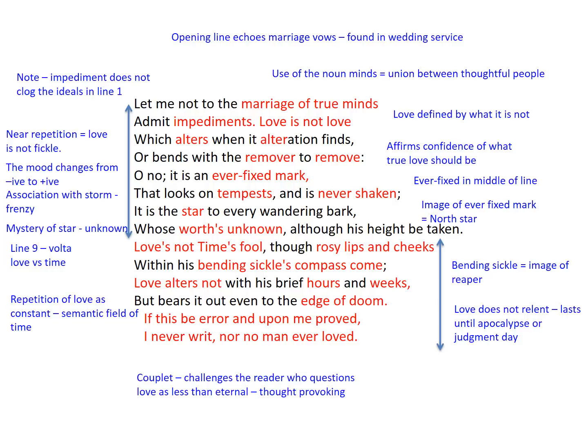Fundamentally, Sonnet 116 is one of the most iconic poems of its type and of its time, as it establishes love as eternal, constant, and ideal. Shakespeare promotes a more intense commitment to love than Petrarch with this sonnet — it is not simply infatuation, but the exploration of life to the end of time.